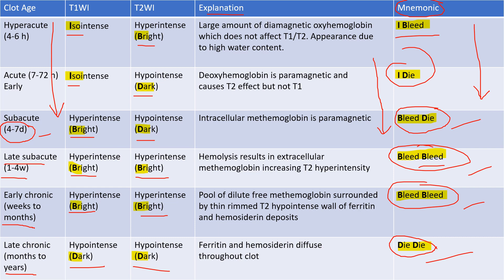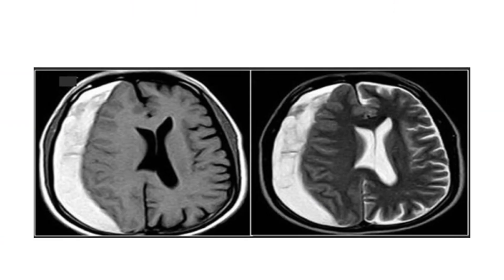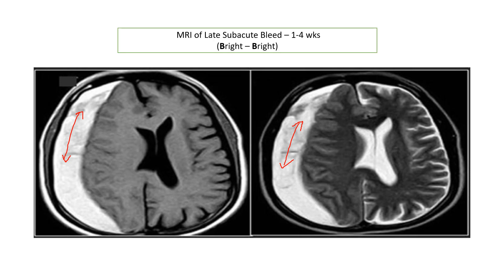Here is another example showing a subdural hematoma on the right side. This T1 image shows a bright signal and the T2 image also shows a bright signal — bright bright, that is 'BLEED BLEED.' So this is a late subacute hematoma, that is one to four weeks old. Try to remember the table by rewinding the video.